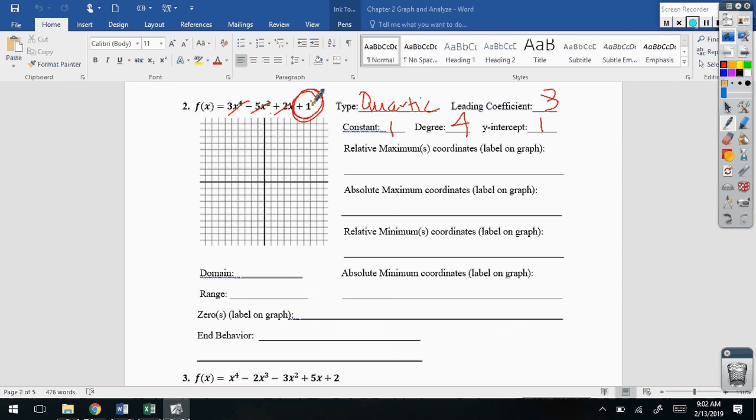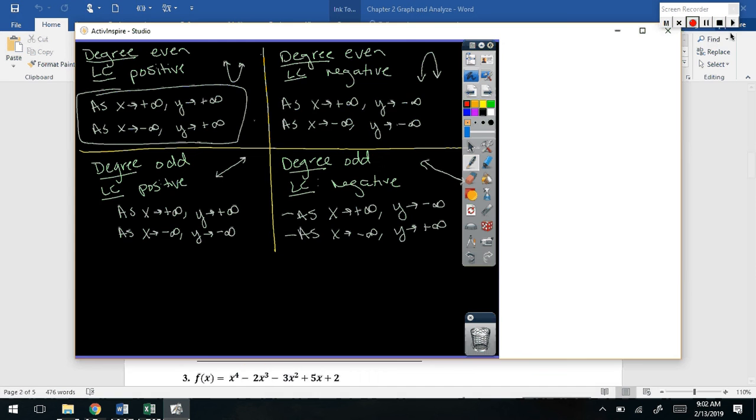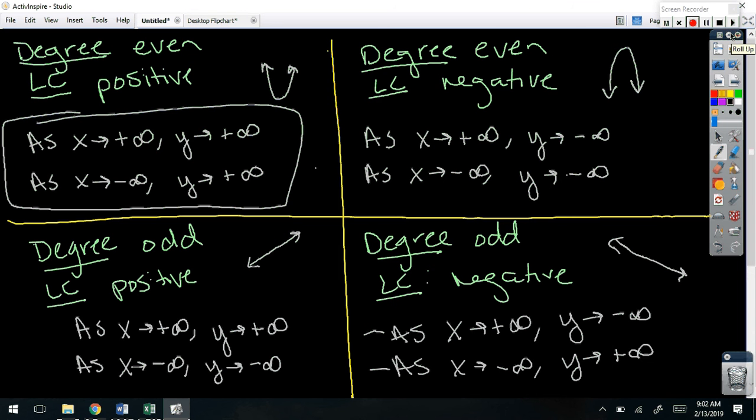Looking at this, how about the end behavior? Because I don't have a graph to look at right now. As x approaches positive infinity, Y approaches positive infinity. As X approaches negative infinity, Y approaches positive infinity. How did you know that both ends went up? It's positive even. It's positive even. And every single positive even sits in that very first point. Make sense so far? Let's take out your calculator and graph them.